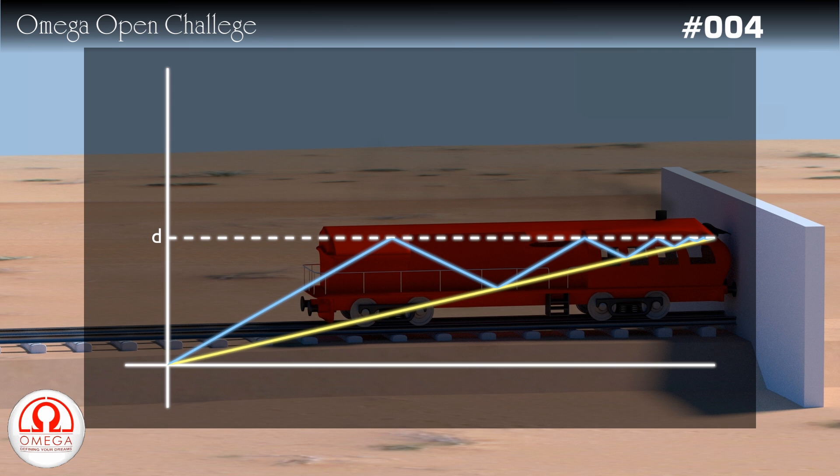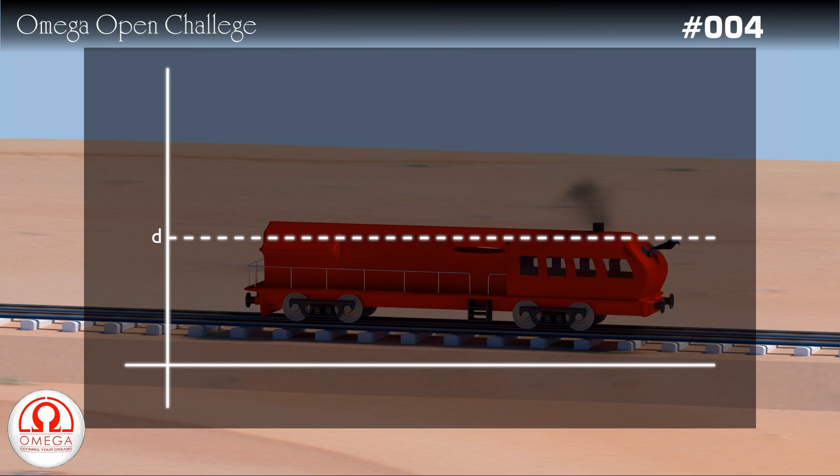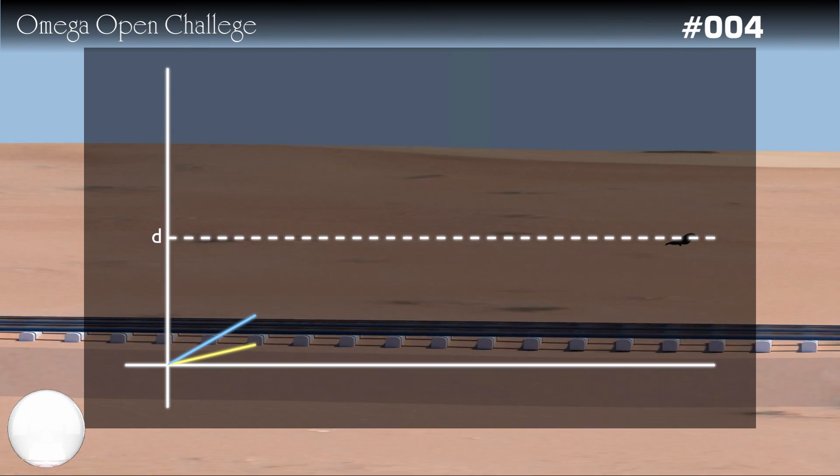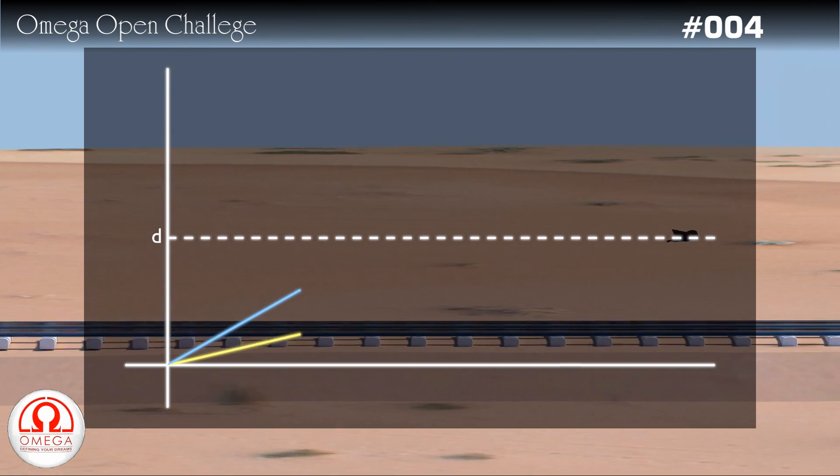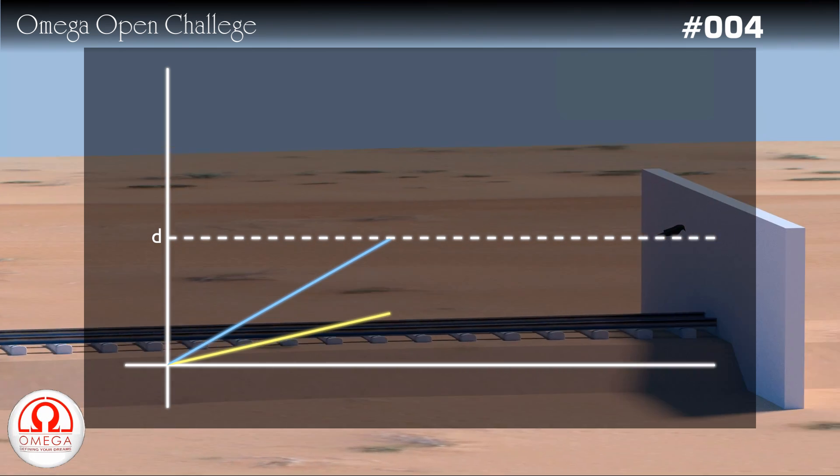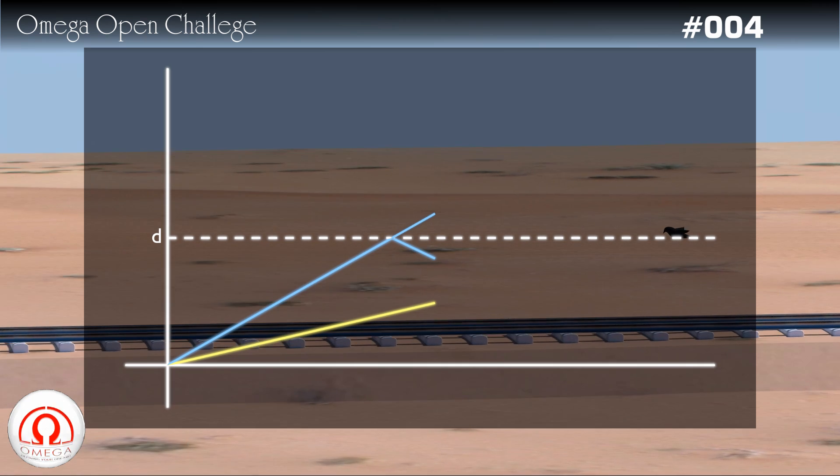Now from this graph, let us draw the distance-time graph of the bird. Since the distance will always increase, when the bird reaches the wall, while its displacement starts to decrease, its distance keeps on increasing with the same rate. So its distance-time graph instead of moving down keeps moving up with the same slope.